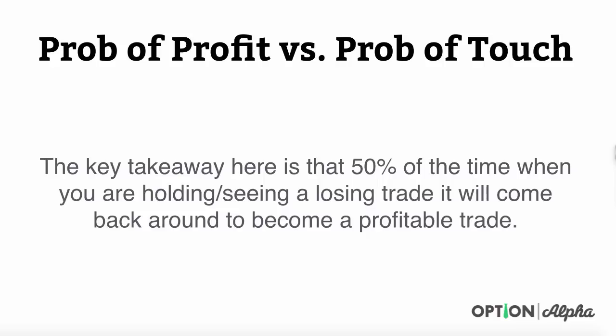The key takeaway is that 50% of the time when you're seeing a losing trade, it will come back around to become a profitable trade. This means you've got to reduce your position size so that you are able to hold a losing trade all the way through expiration. Think of it like football — the team that wins at the end of the game is not always the team that's ahead at halftime. You have to be diligent and hold the trade all the way through expiration, where you actually have a higher win rate and a better chance of success.